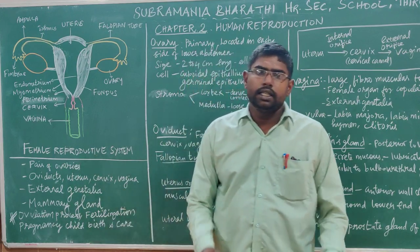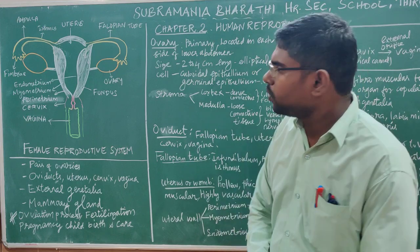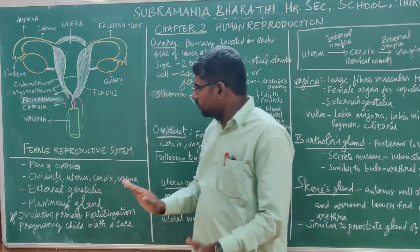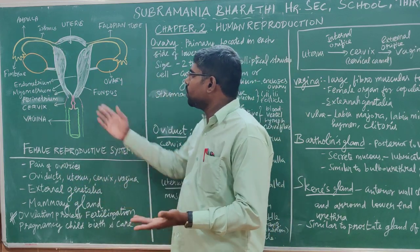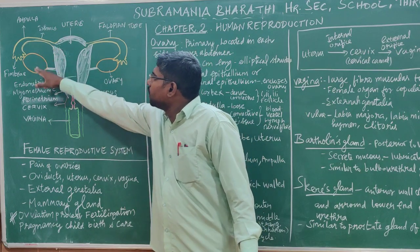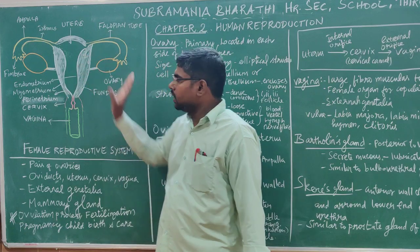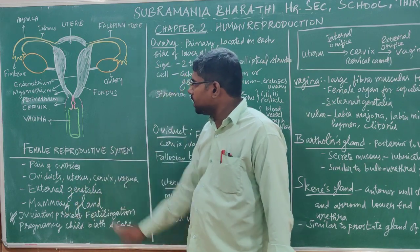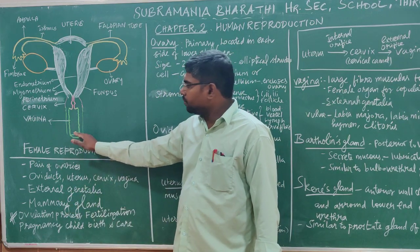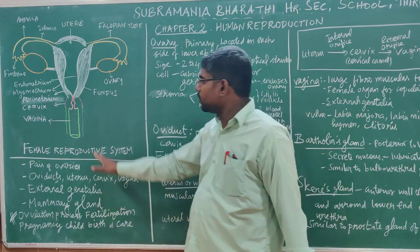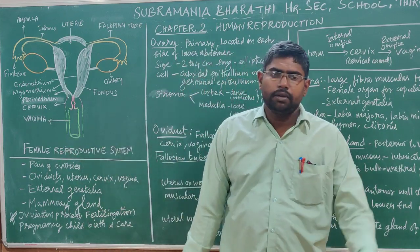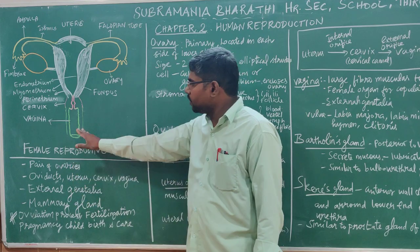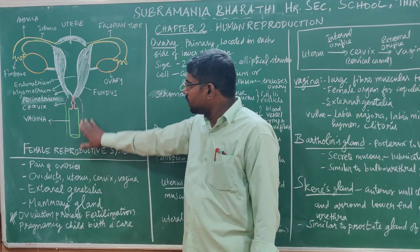These are the ducts through which the ovum travels from the ovary. The external genitalia includes the vagina opening. So the pathway goes from ovary through the ducts to the external genitalia.